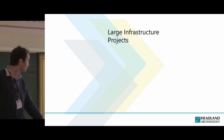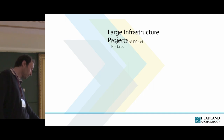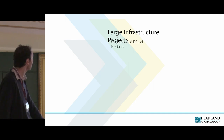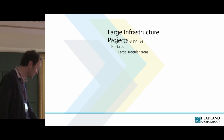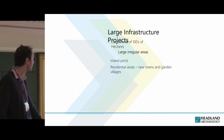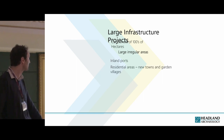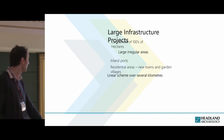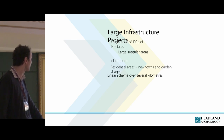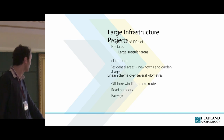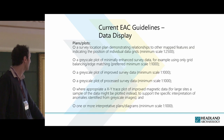Large infrastructure projects consist of hundreds of hectares. There's been talk about large irregular areas — they're not nice square sites, they're normally quite irregular, which is awkward. They can be inland ports. Linear schemes can consist of several kilometres — we've done 140 hectares, 30 metres wide, throughout the south coast, which took a long time to do. They're normally offshore wind farm cable routes, road corridors, railways, and pipelines.